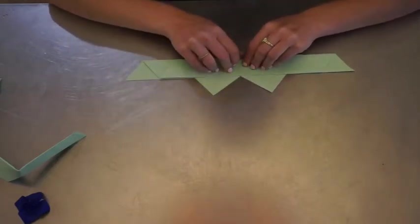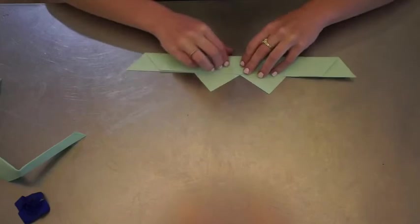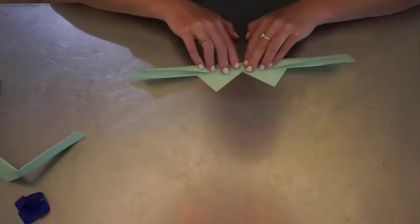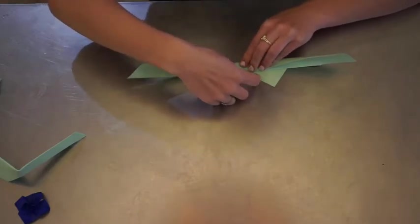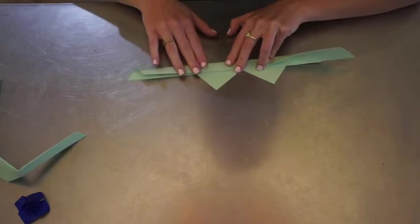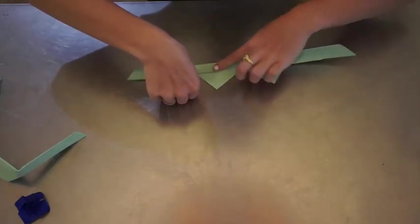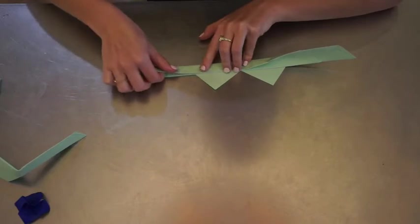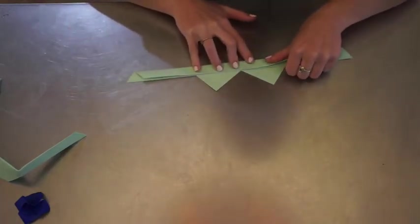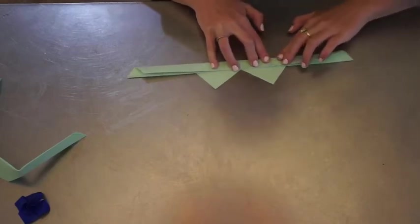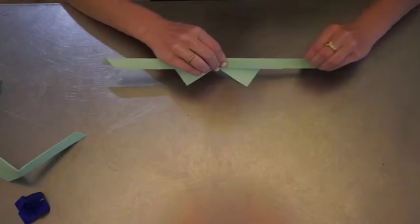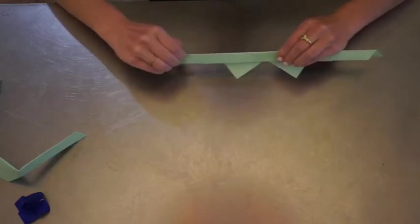Then you're going to take this edge here and fold it one last time. As long as it doesn't go past the little valley here, then it's all good. This is a lot of layers to be folding through, so you're going to need to use quite a bit of pressure to make sure you get a nice crease.